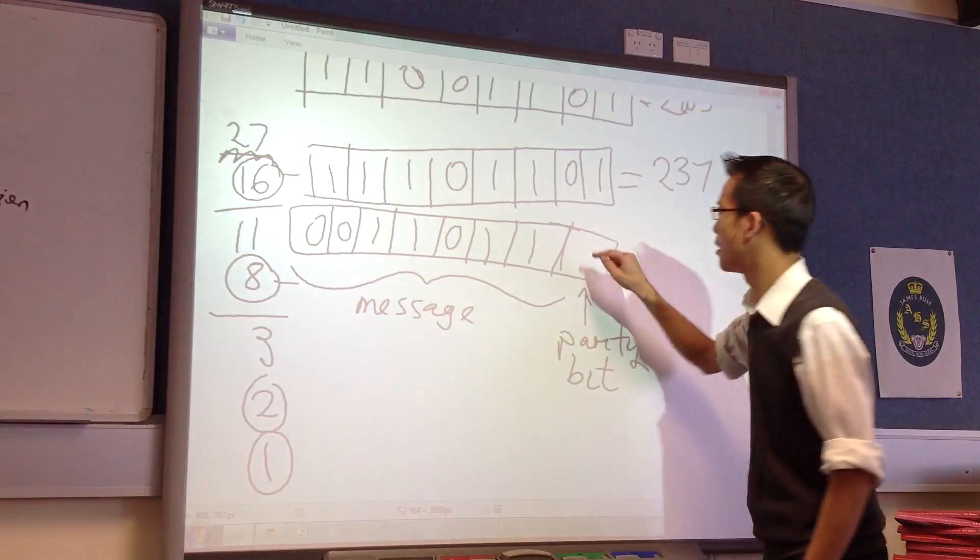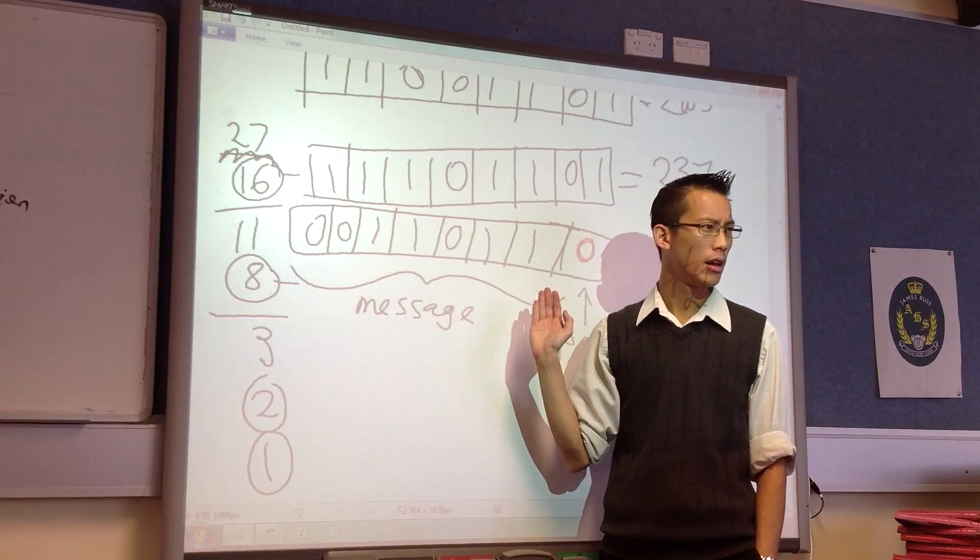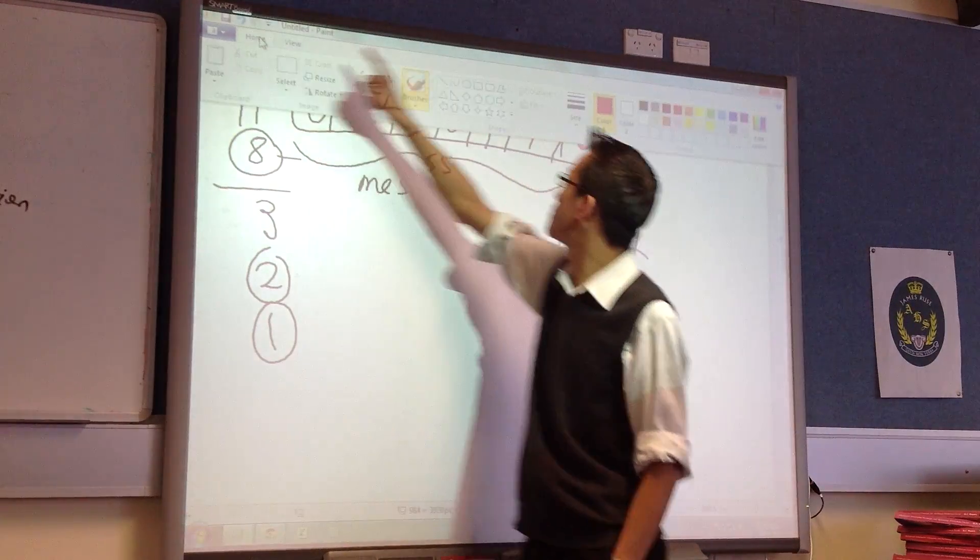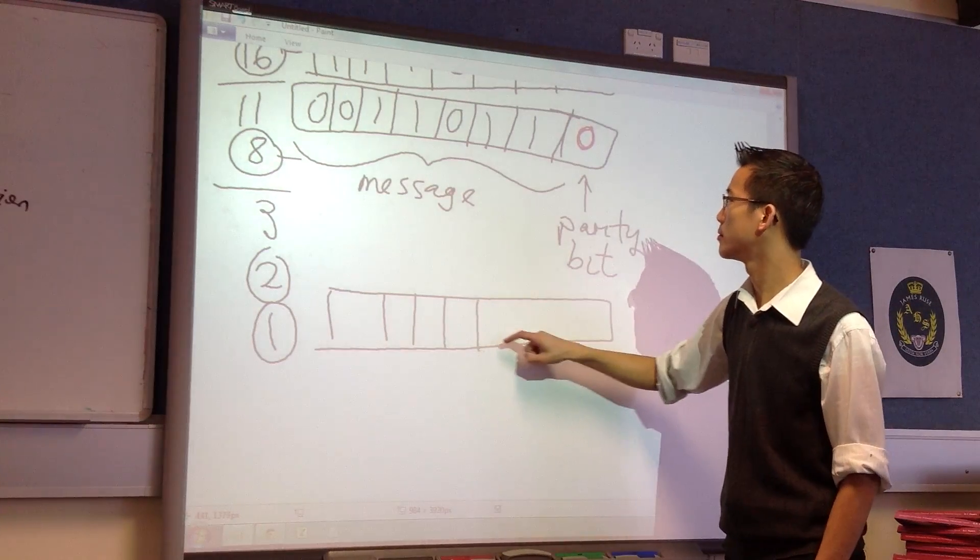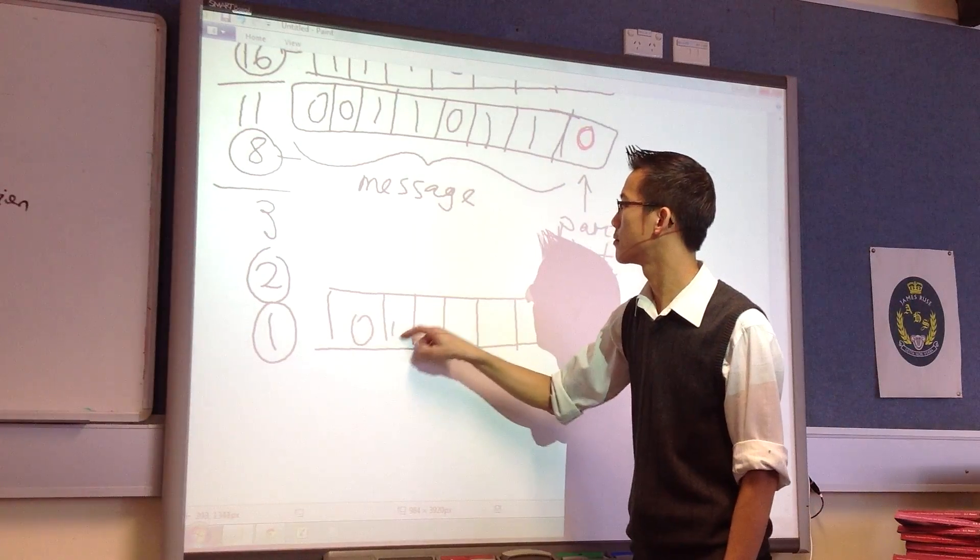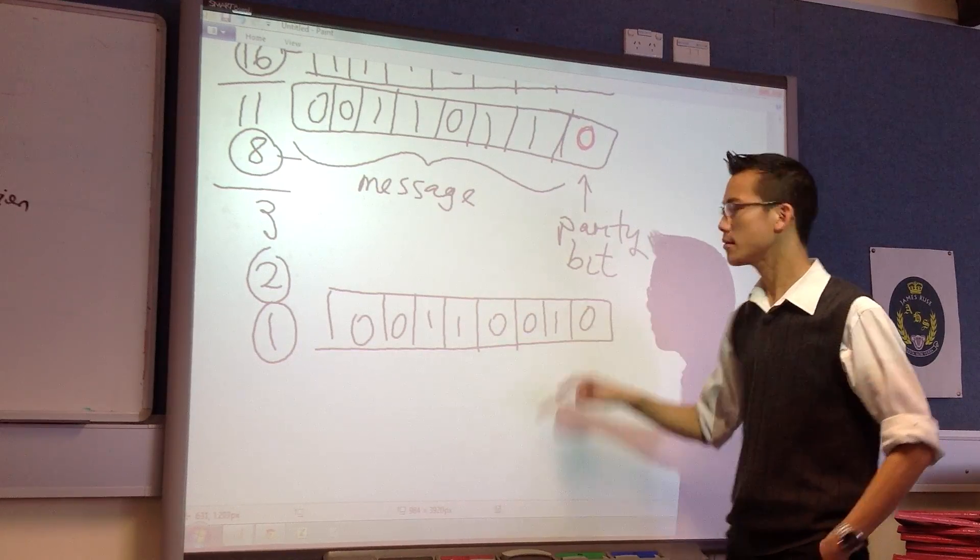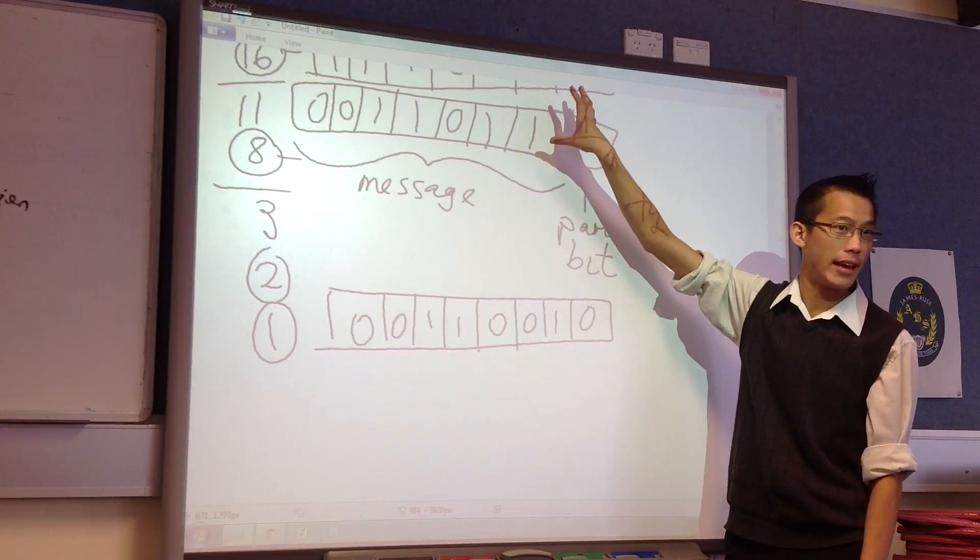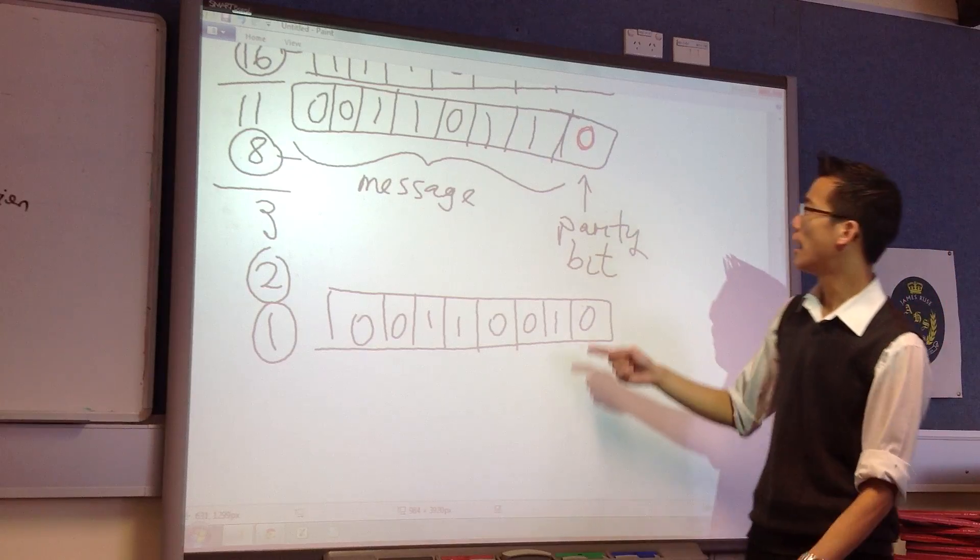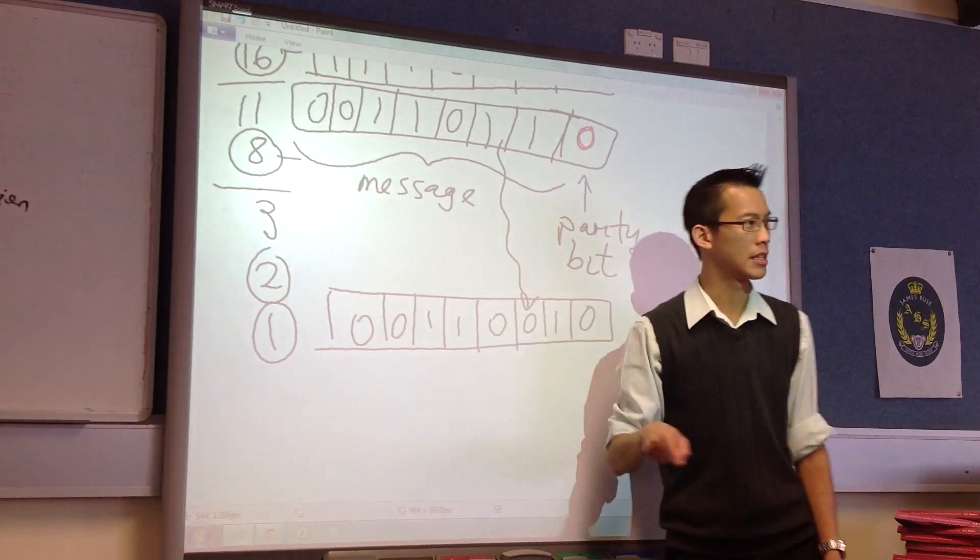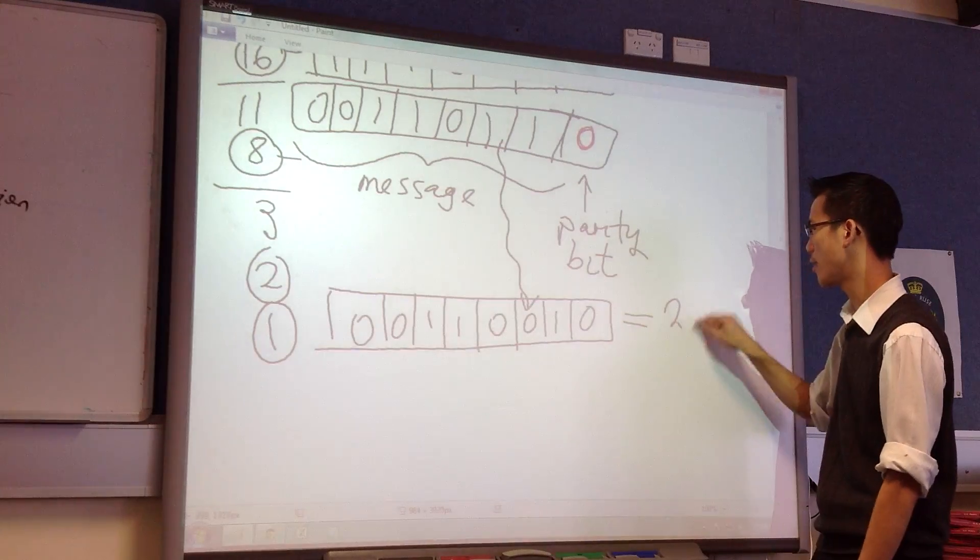So in another color maybe, I'm going to put 0 there. That ensures that there's an even number of 1s along here. Now let's consider what would happen if there was interference. So you can see what's happened. From what I wanted to send or what I did send, suppose this is what is received. What's the difference? Just one bit has changed. It is this bit here. It's no longer correct. Now what age would this be? This would be missing the 2, so this would be 25.